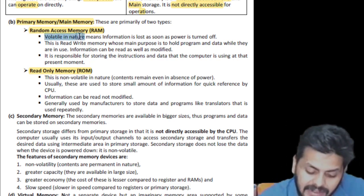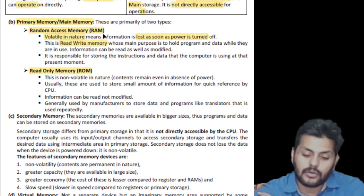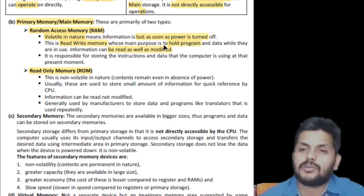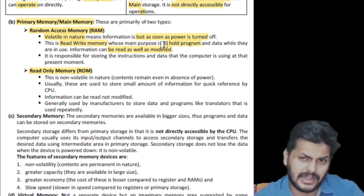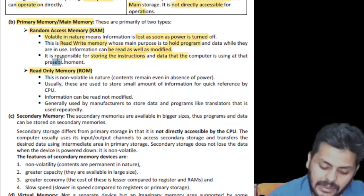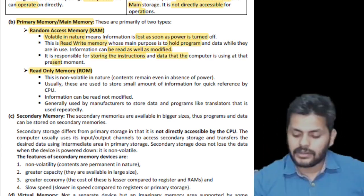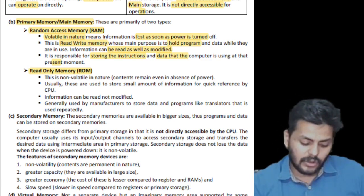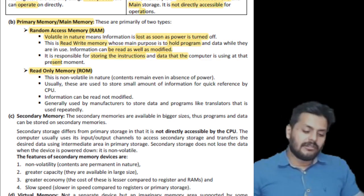RAM is absolutely volatile — data is lost as soon as power is turned off. It is a read-write memory whose main purpose is to hold programs and data while in use. Information can be read as well as modified. RAM stores the instructions and data the computer is using at the present moment — whatever apps are currently open are all open on the RAM.